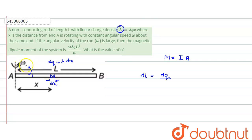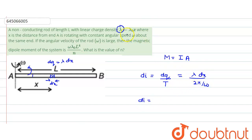Omega is the angular velocity, so what would be the time? It would be the time period. The value of dq is lambda multiplied by dx, and the time period is 2 pi divided by omega. So our di turns out to be: since lambda is lambda naught into x, we substitute that value, bringing omega into the numerator, giving us lambda naught times x times omega times dx divided by 2 pi.